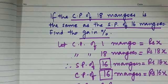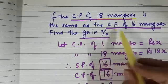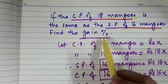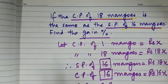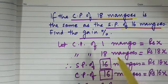This is an interesting question. If CP of 18 mangoes is equal to SP of 16 mangoes, we need to find out what is the gain percent. In this question, we will first assume the cost price of one mango.